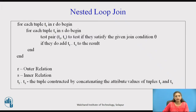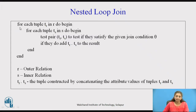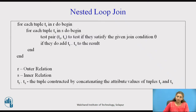One tuple from relation R is taken to main memory, then all the tuples of relation S are brought to main memory and compared. The algorithm is: for each tuple T_R in R, and for each tuple T_S in S — the first tuple from R is taken and compared with every tuple of S. Each pair is tested to see whether they satisfy the join condition, and if so, the concatenation of the two tuples is added to the result.